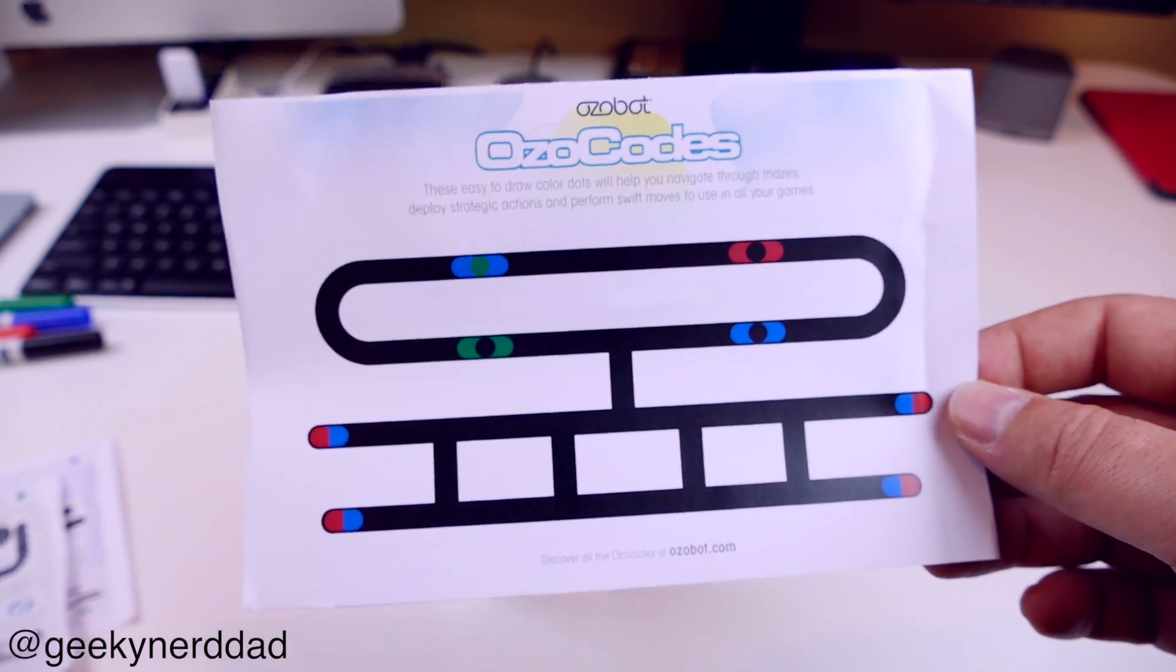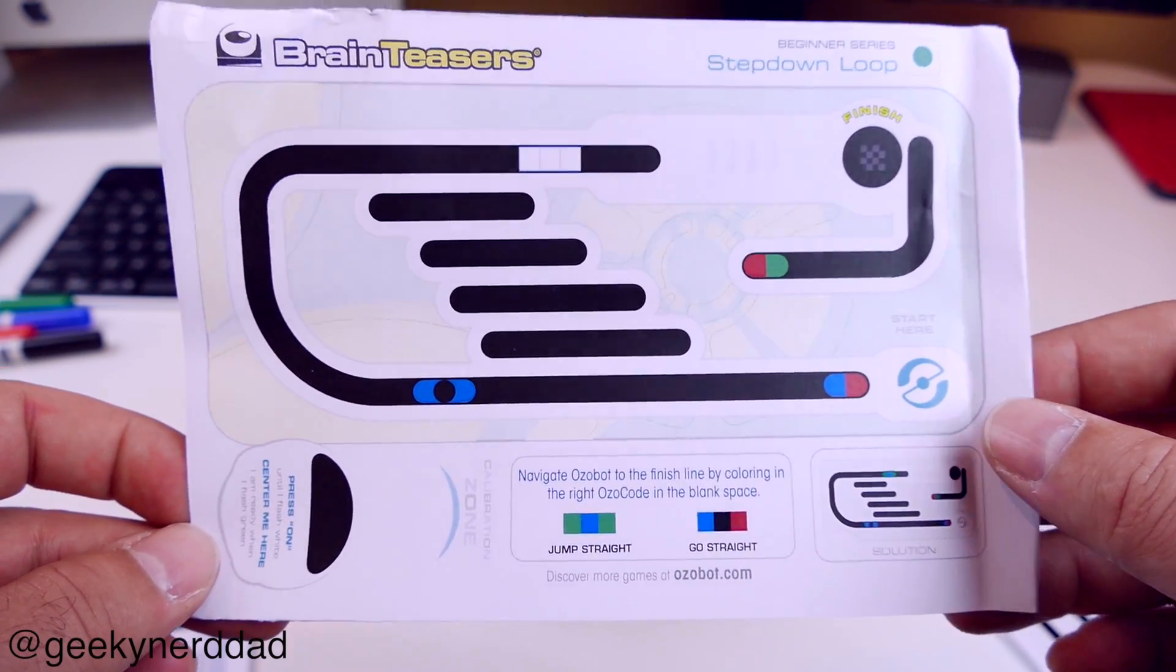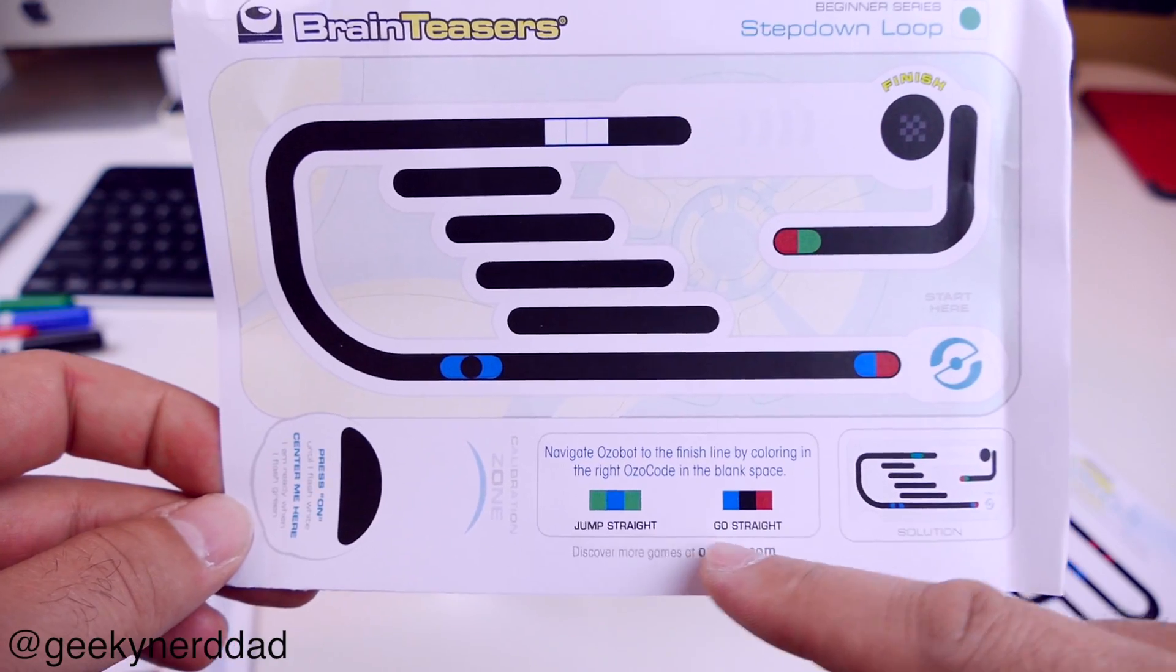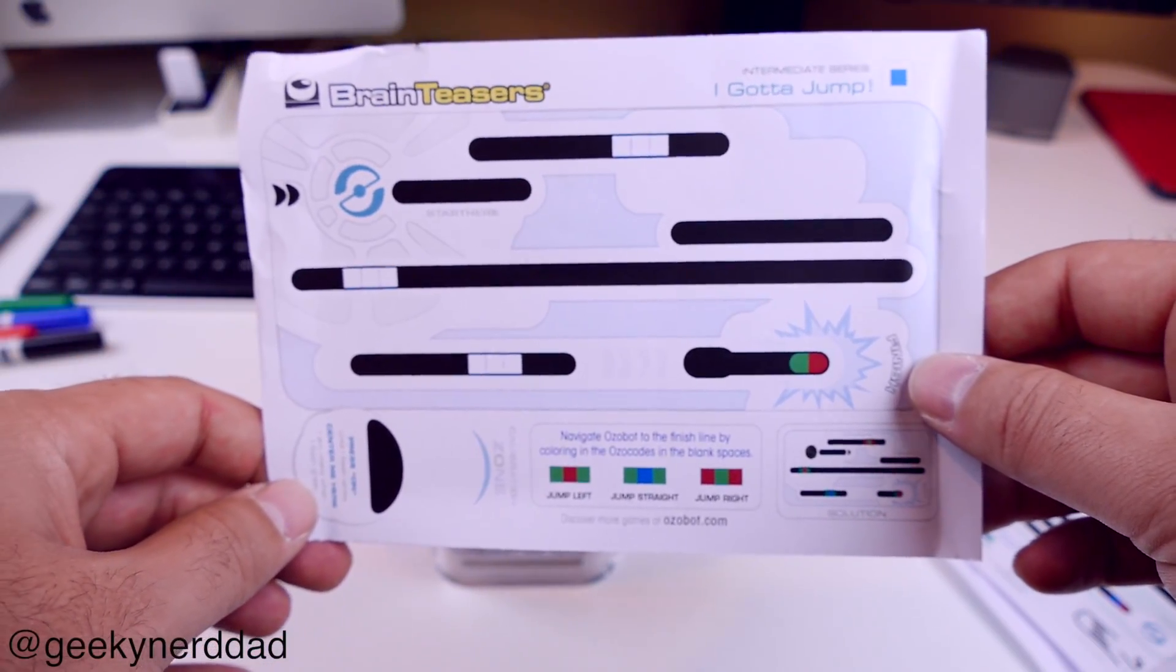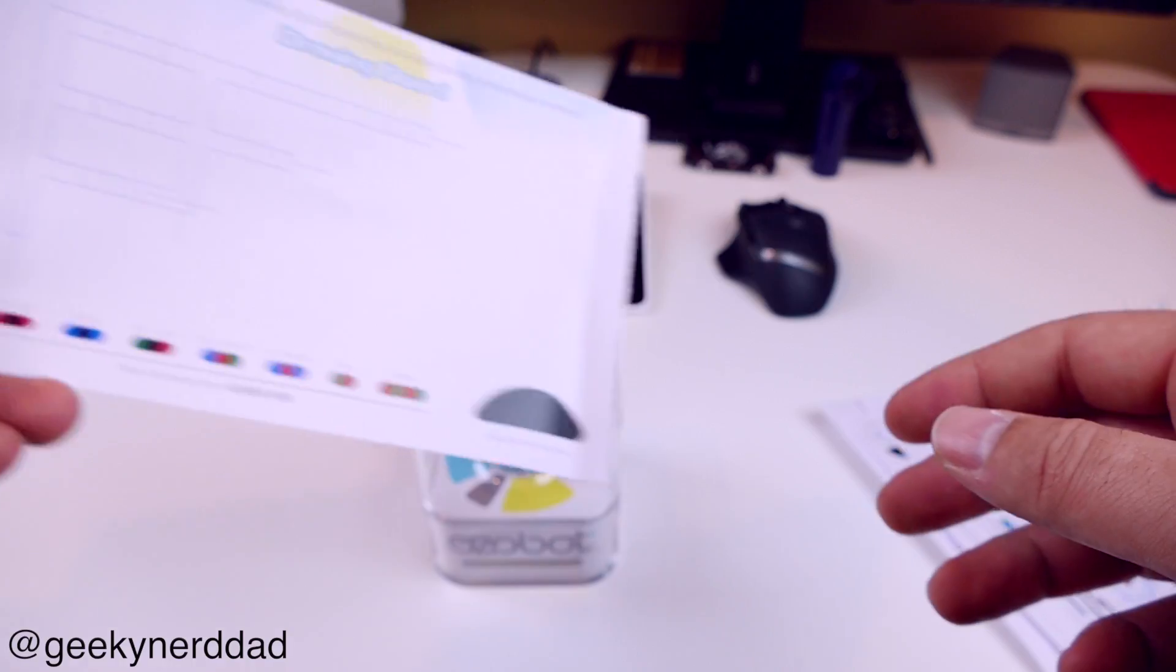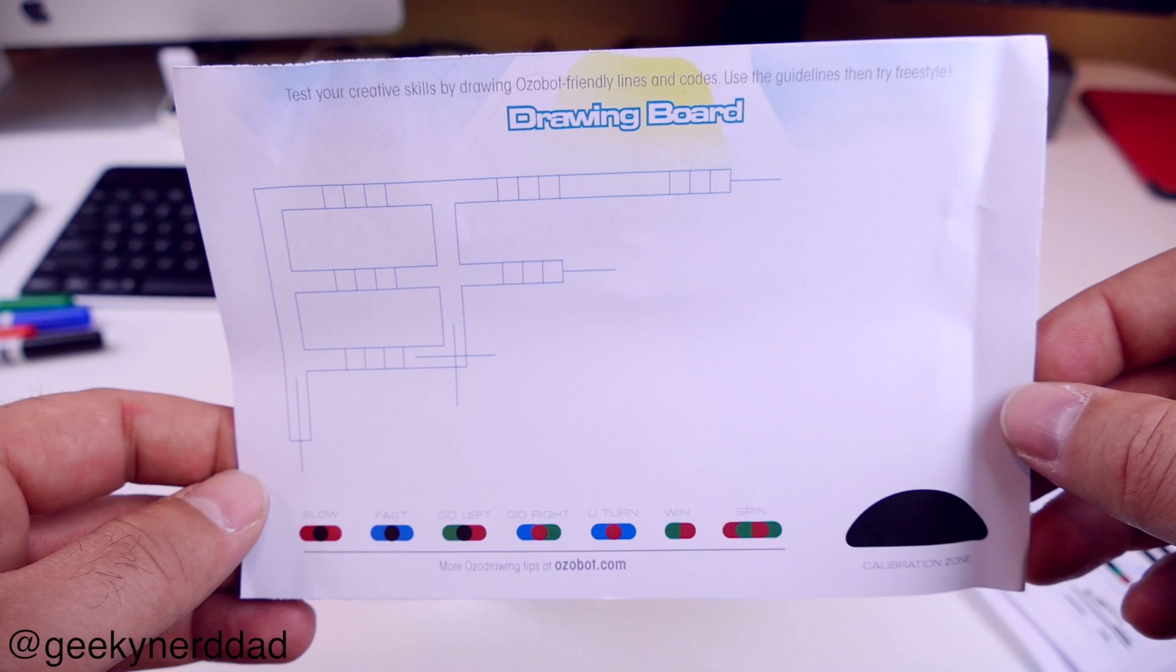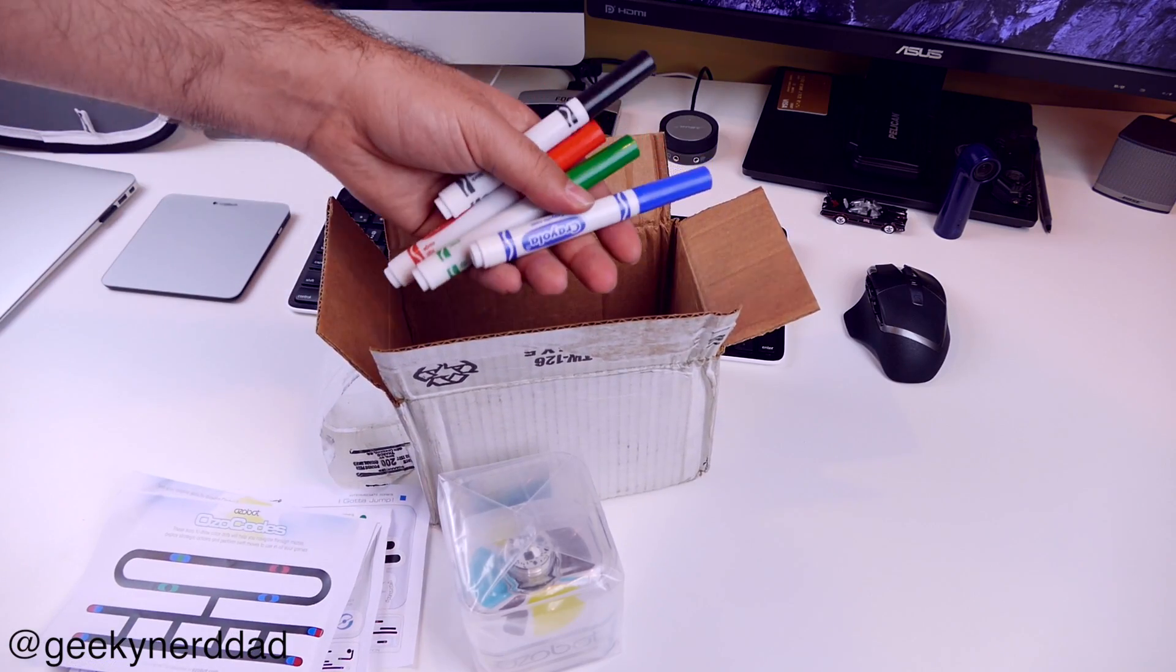It reads these little colored dashes and gives it different commands like jump, go straight, a bunch of different things. This one is what they call a brain teaser where you have to fill in using the three that it gives you, put them in the correct spot. It's just like little games and different things.